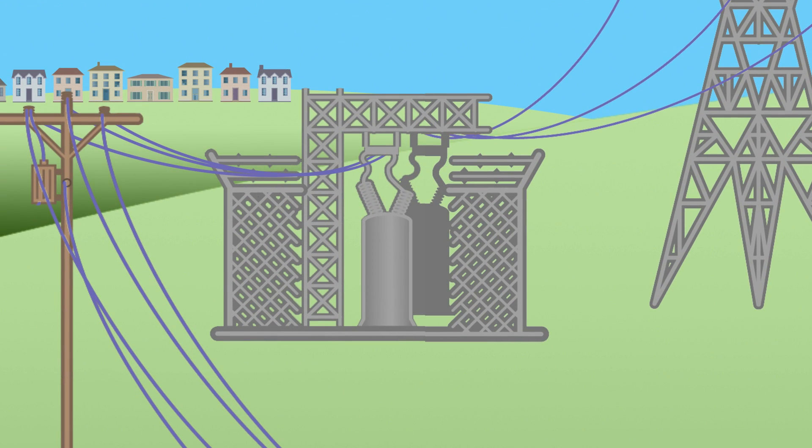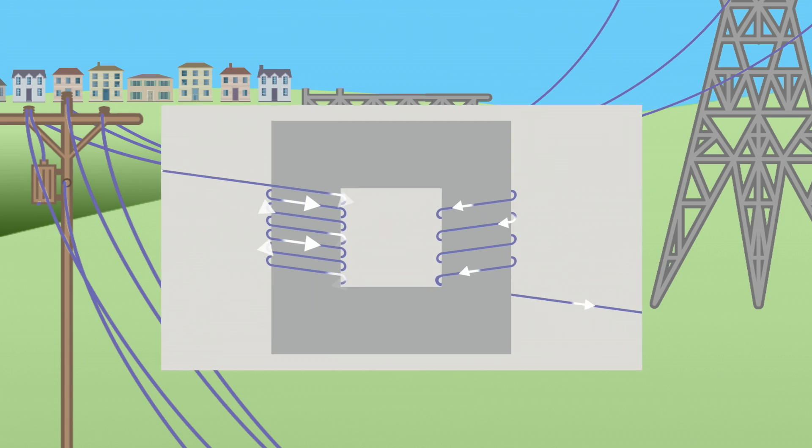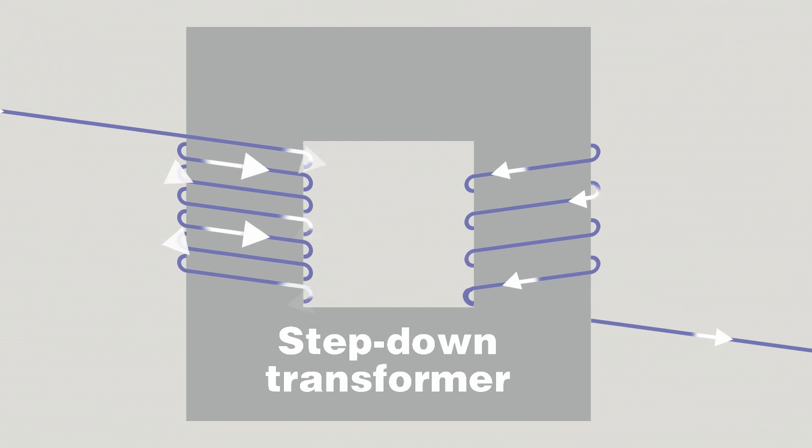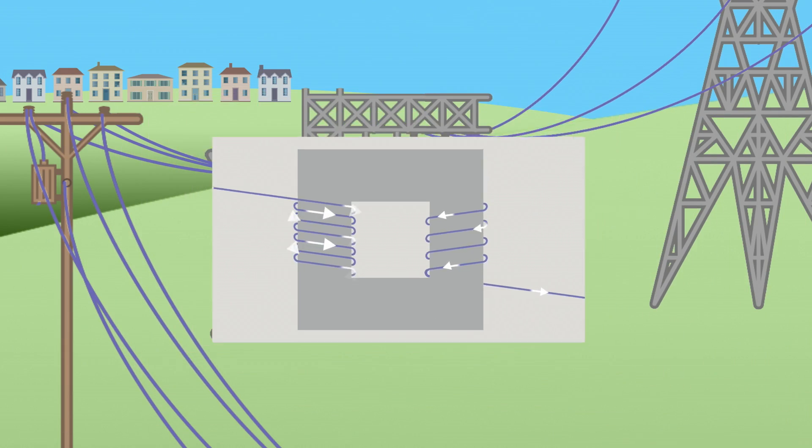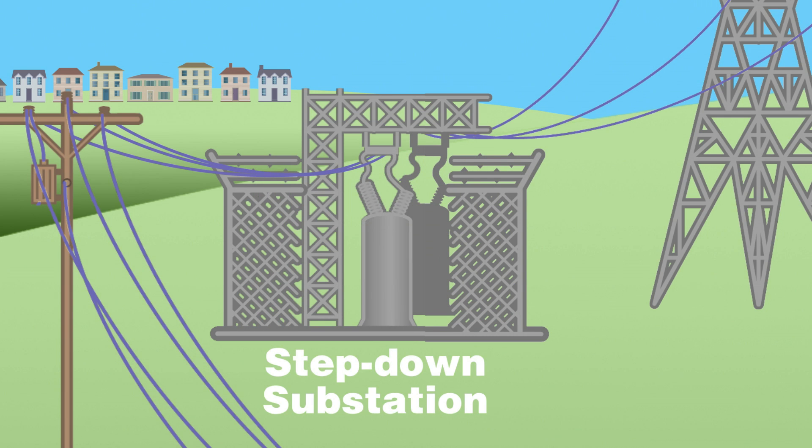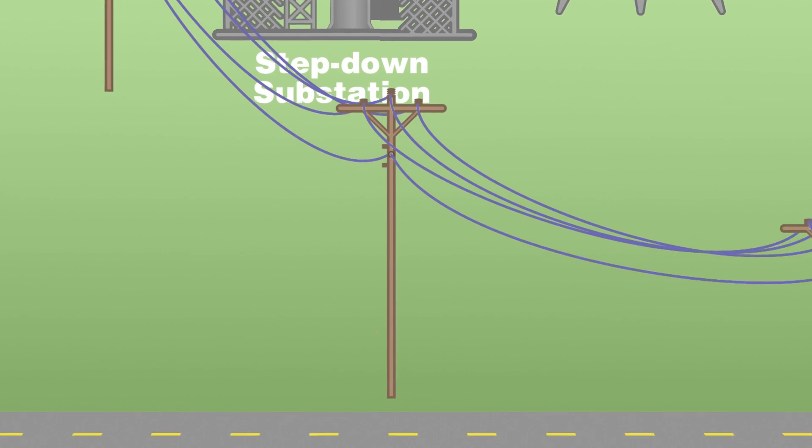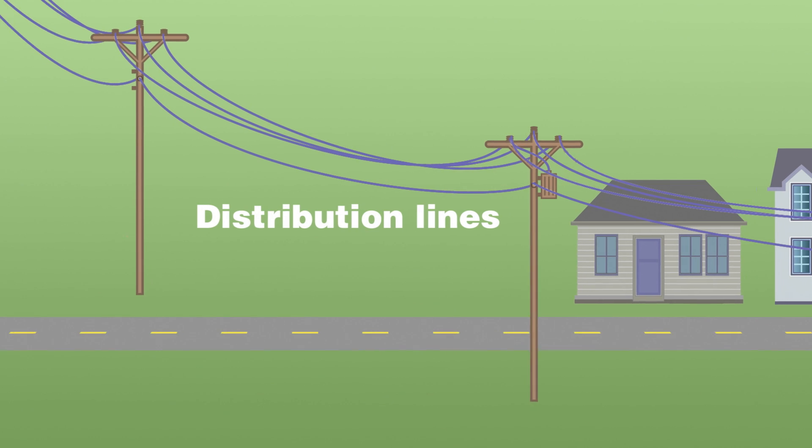After electricity reaches your community, it passes through a transformer in a substation, and the voltage is lowered to a level compatible with distribution lines, the second type of power line. Then the electricity is pumped out across a network of distribution lines.